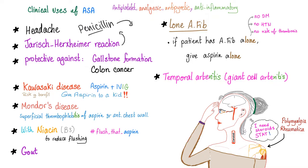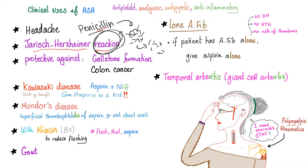The Jarisch-Herxheimer reaction: syphilis is caused by Treponema pallidum. When you treat syphilis with penicillin, penicillin destroys the Treponema pallidum bacteria, and the released antigens cause this self-limited reaction. If you have a patient with that reaction, you can give aspirin.